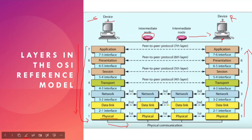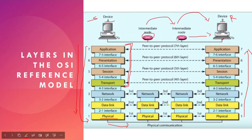Intermediary nodes such as routers only access the lower three layers: Network, Data Link, and Physical. They do not access data at the Transport layer and above, like the Application layer. Each layer's data is only accessible to its corresponding layer. So intermediary nodes like routers can only see data up to the network level — they cannot read the higher-layer data.